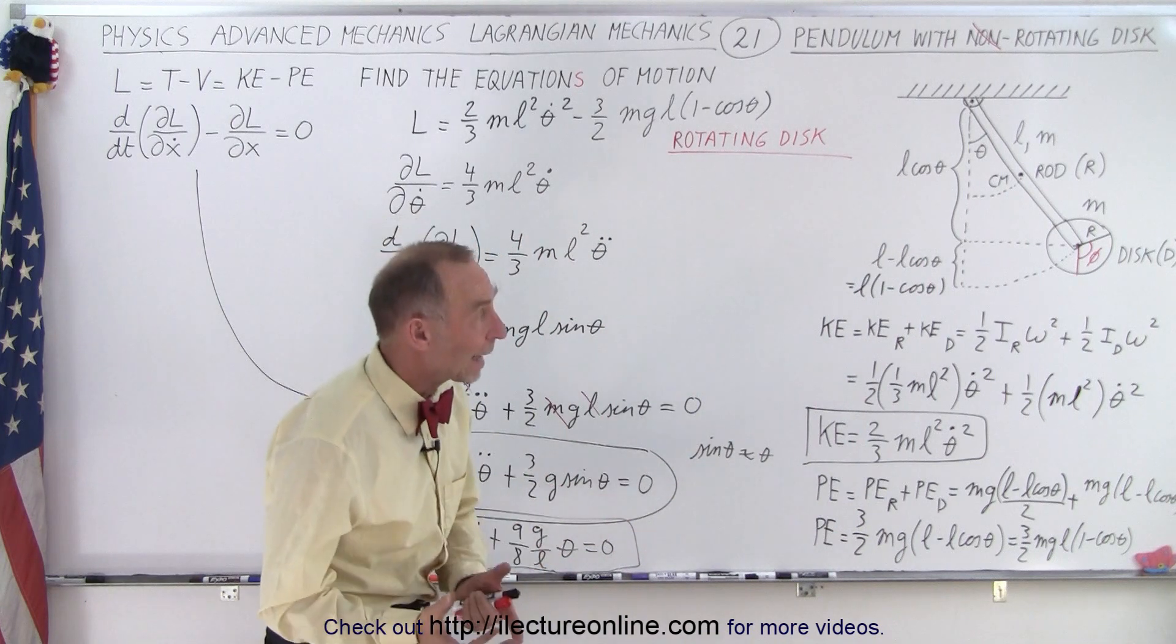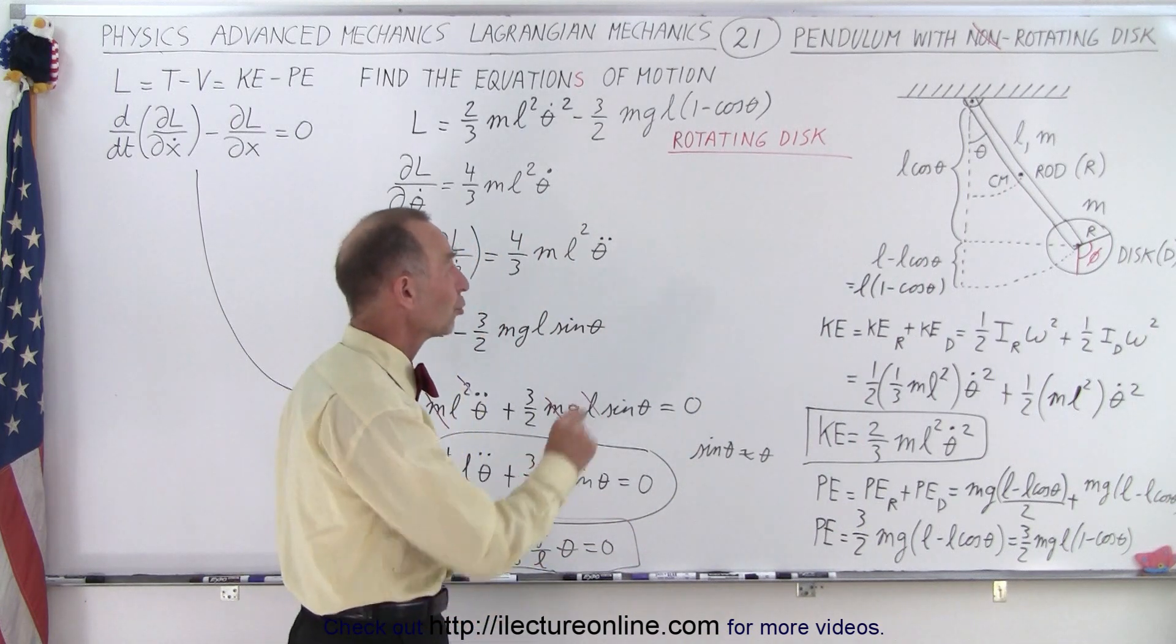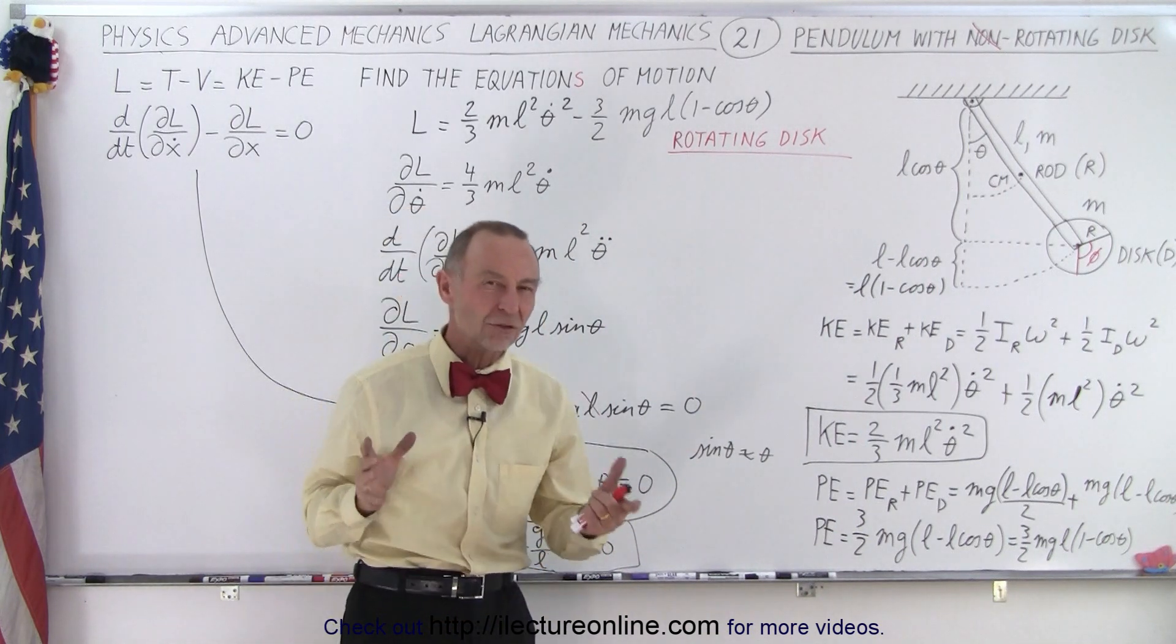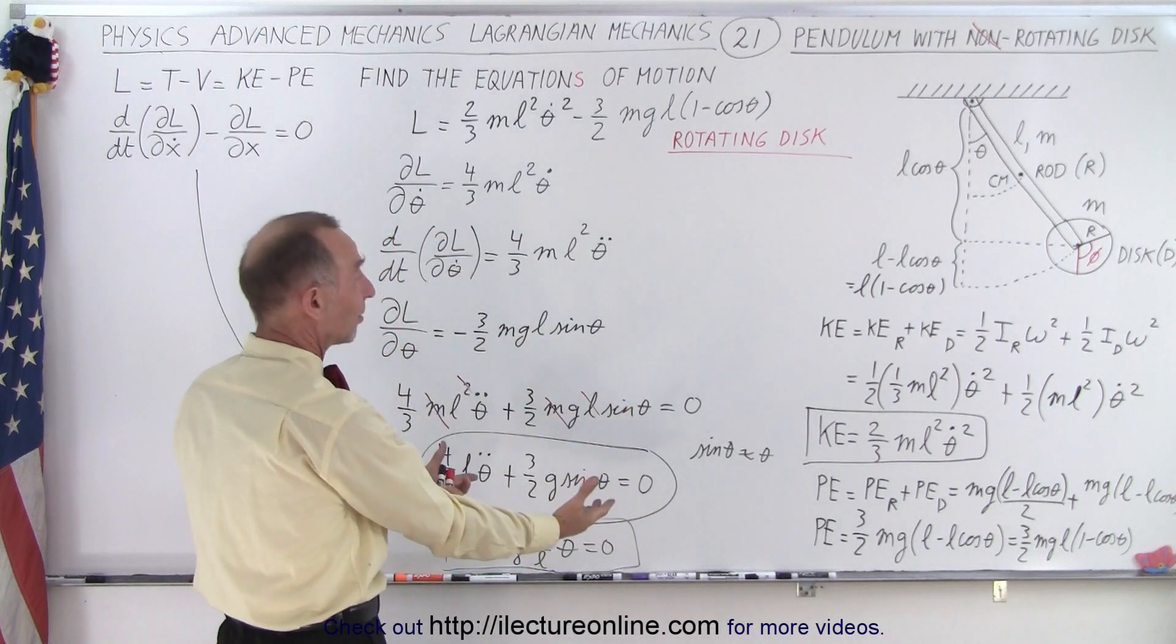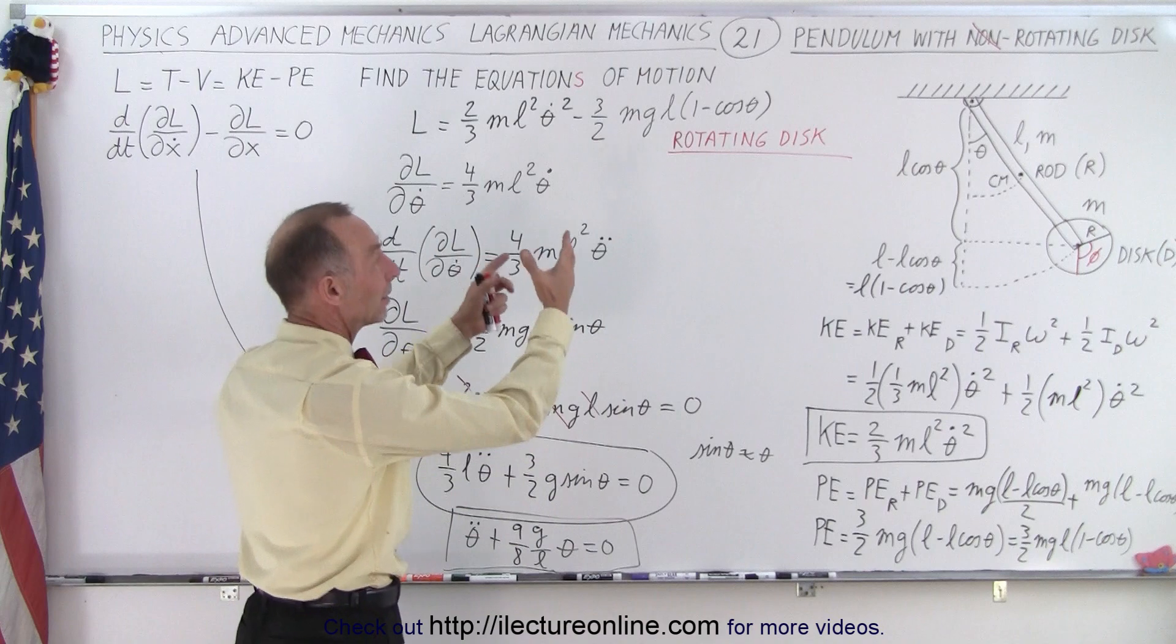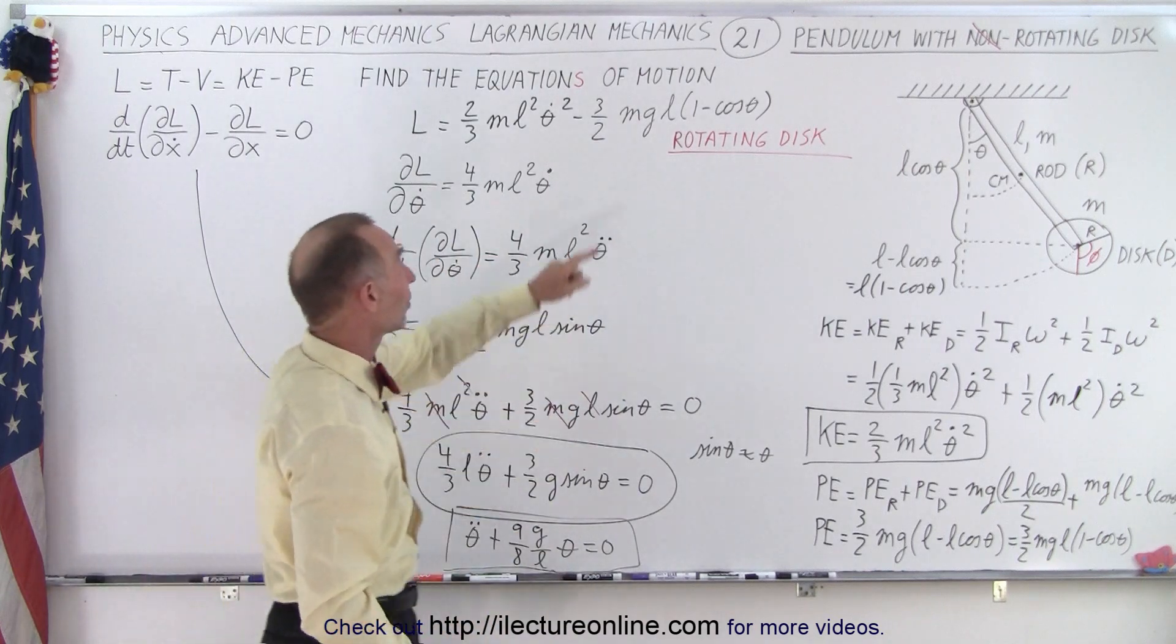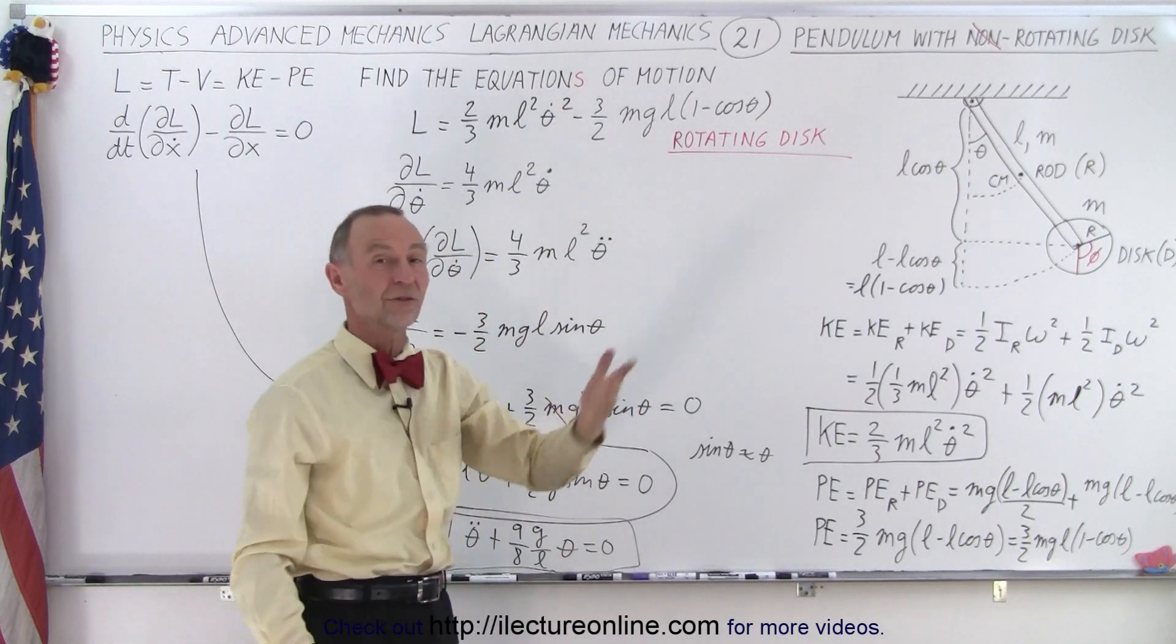And when it does so, we need to add an additional equation of motion to account for that motion. And that's the beauty of the Lagrangian technique. Everything else stays exactly the same. We just now add an additional equation. So instead of finding one, we now find two equations of motion.